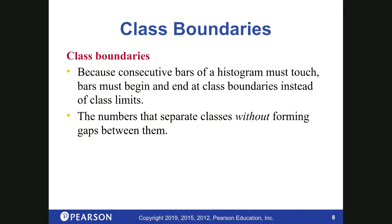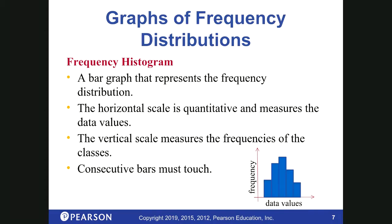In a frequency histogram, on the vertical axis you label the frequency, and along the bottom you have the class boundaries — because you want the bars to touch, and consecutive bars in a frequency histogram must touch. A frequency histogram is a really common graph type. Let's talk about how we would make a frequency histogram from our data.